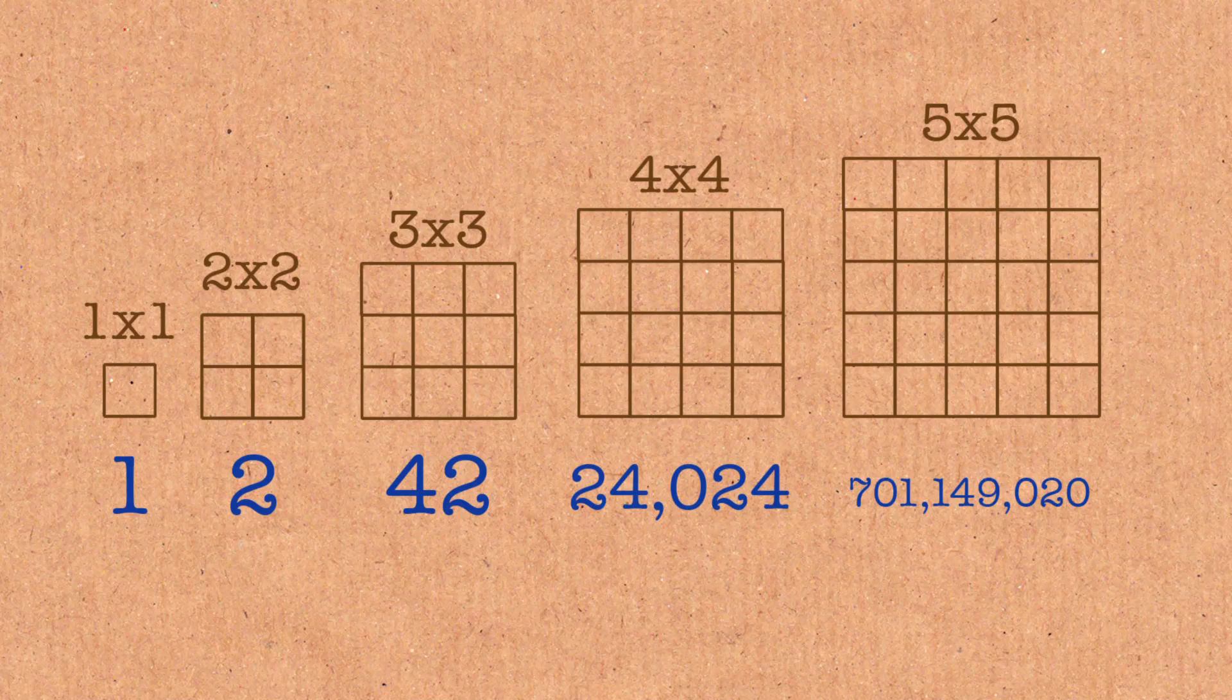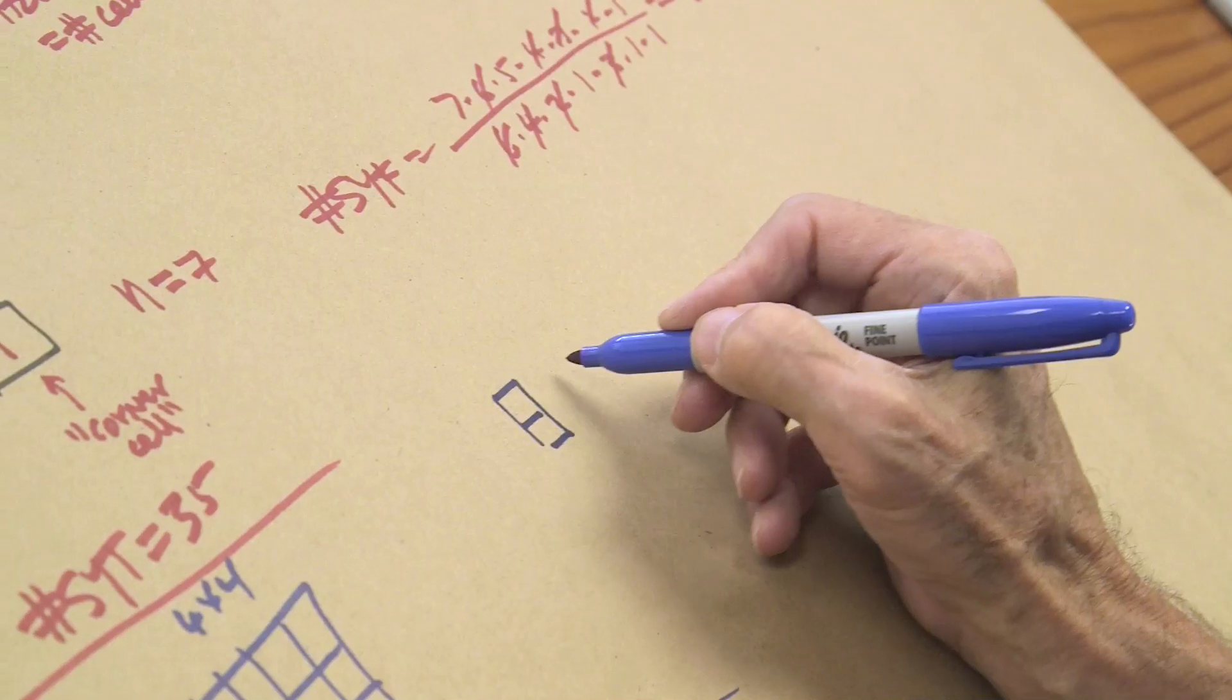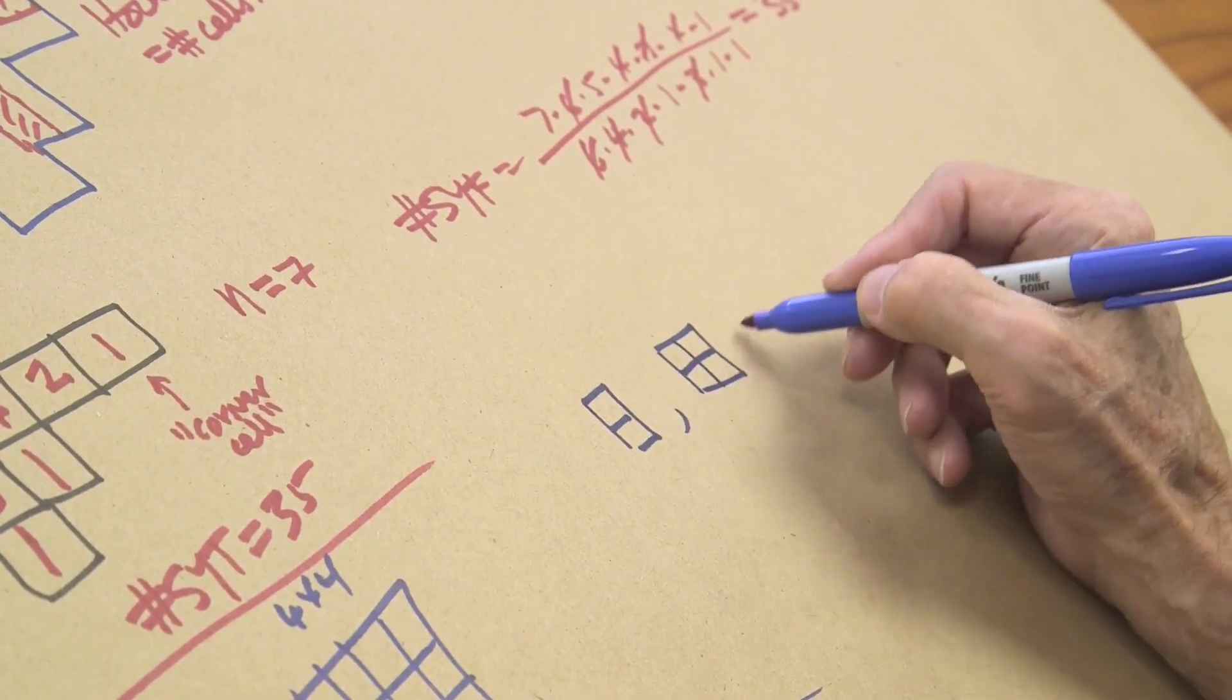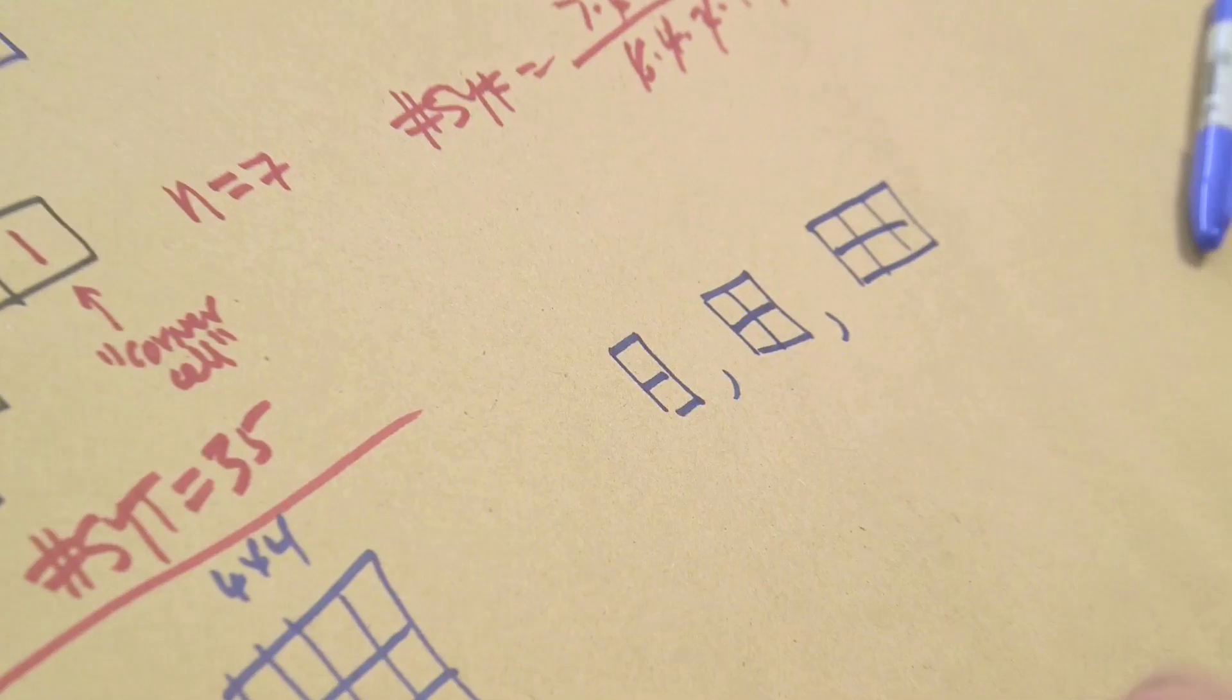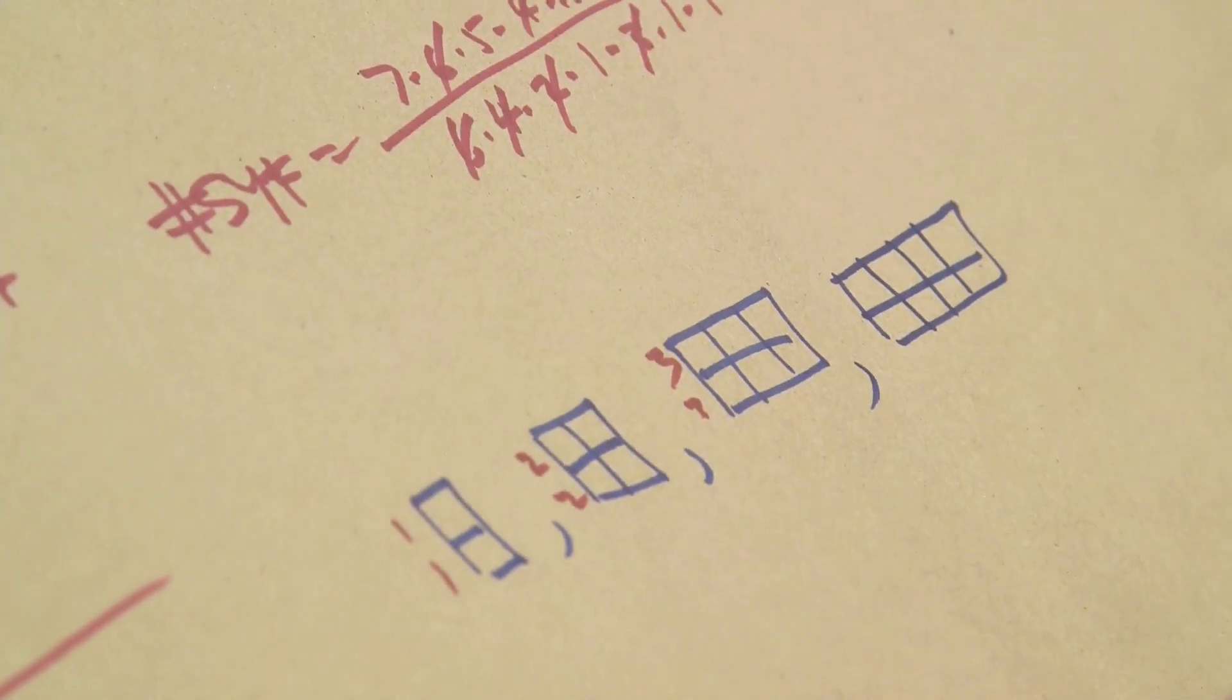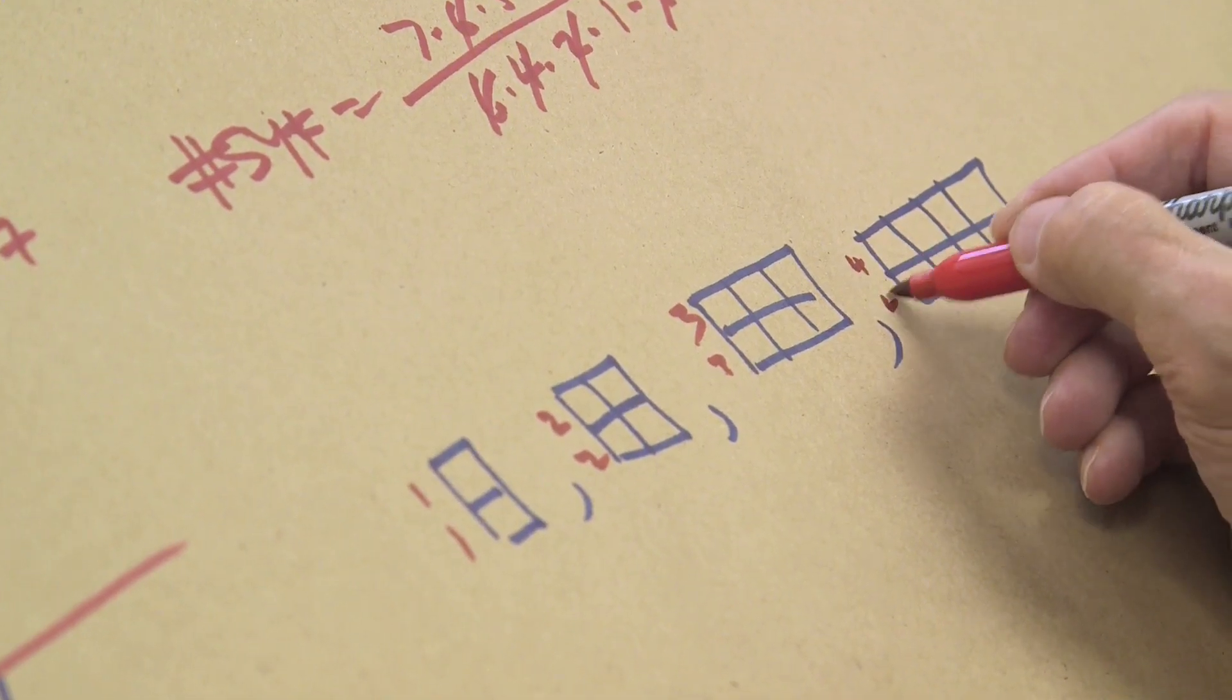An interesting sequence. If I have tableau shapes with just two rows of the same length, so this shape we've called one-one, this we've called two-two, this would be called three-three, this is four-four, so I'm talking about the sequence et cetera.